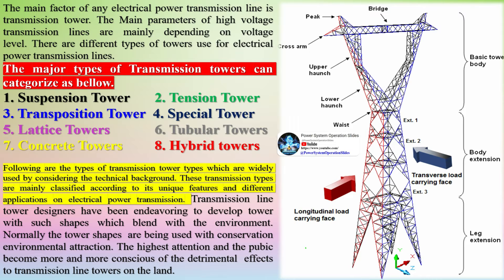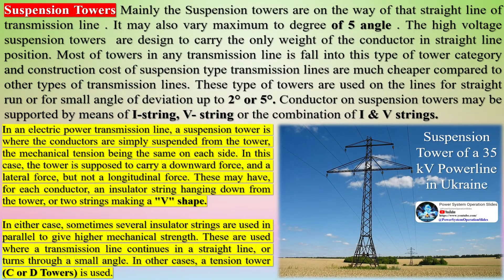The major types of transmission towers are: suspension tower, tension tower, transposition tower, special tower, lattice towers, tubular towers, concrete towers, and hybrid towers. These types are mainly classified according to their unique features and different applications in electrical power transmission.